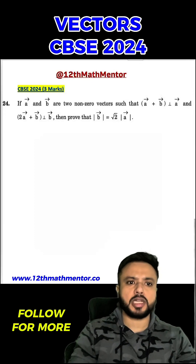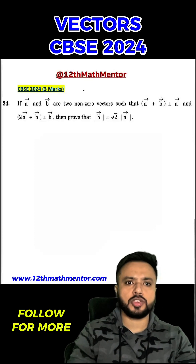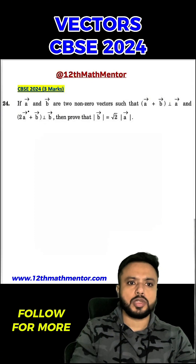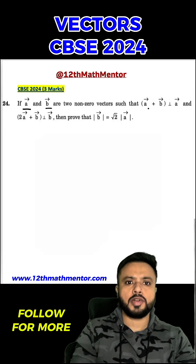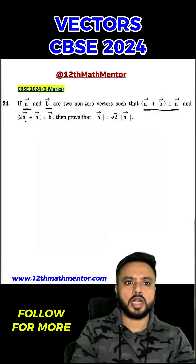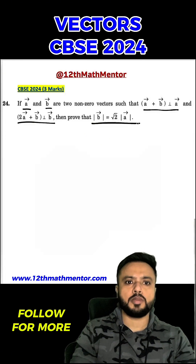In CPAC 2024 Class 12 Maths Board exam, this vector geometry question was asked for 3 marks. We are given two vectors A and B, where A+B is perpendicular to A, and 2A+B is perpendicular to B. We have to prove that the magnitude of B is equal to root 2 times the magnitude of A.